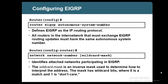EIGRP works only when you have an autonomous system assigned. An autonomous system is a grouping of routers — all routers belonging to the same group with the same number. The group is identified by a number called the autonomous system number.